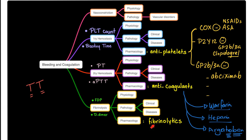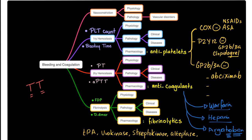Drugs stimulating fibrinolysis are called fibrinolytics, such as natural TPA, natural urokinase, and streptokinase — natural for bacteria but not for you. Other fibrinolytics include alteplase and tenecteplase. Anti-fibrinolytics inhibit fibrinolysis — for example, epsilon amino caproic acid.